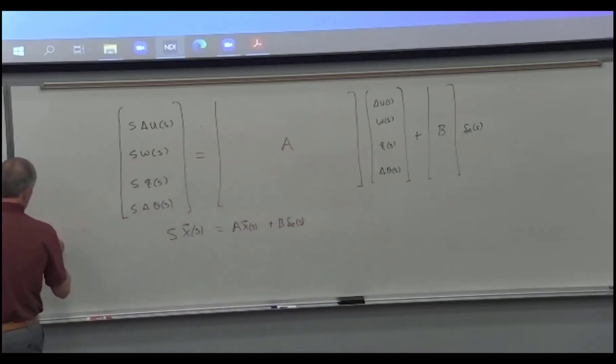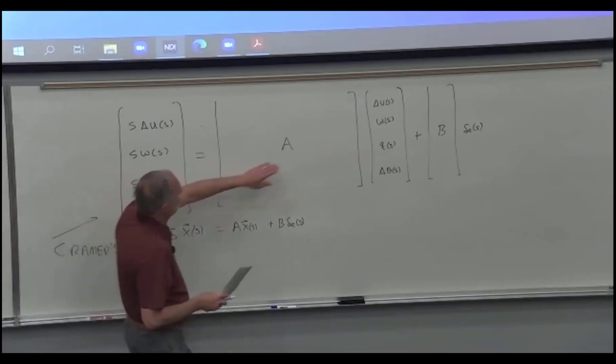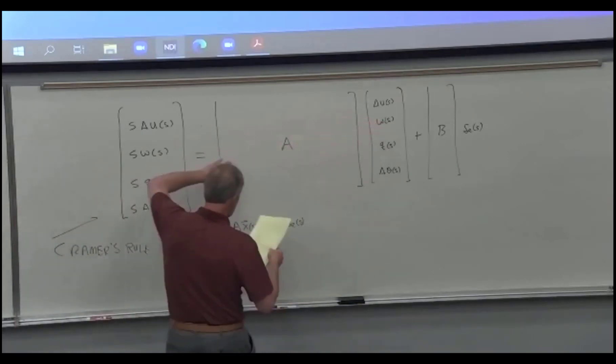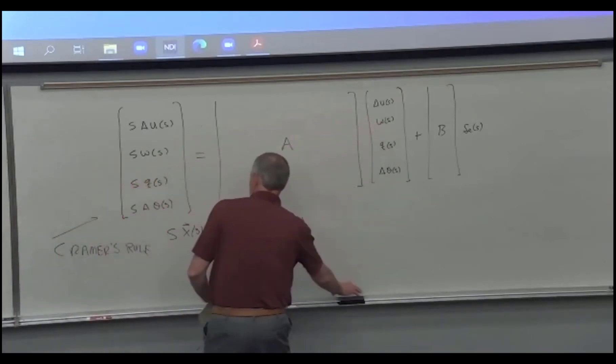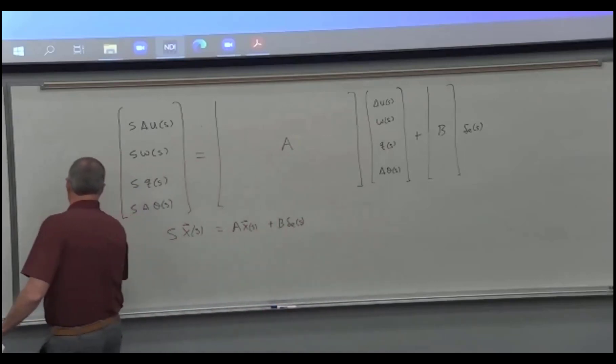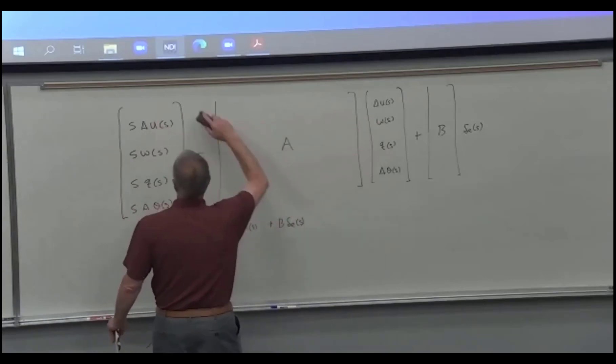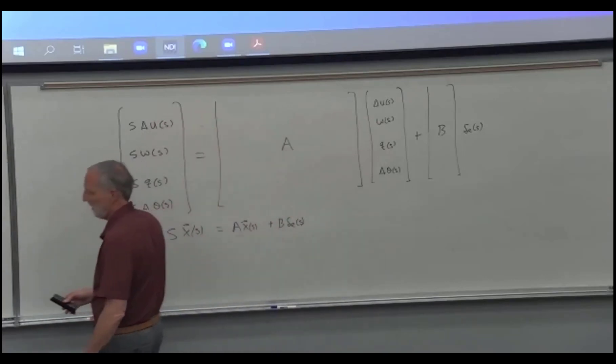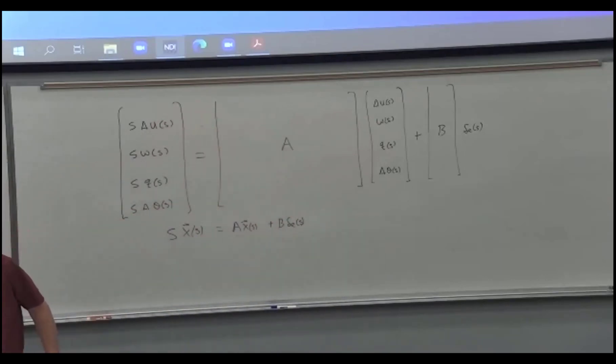If we use Cramer's rule to solve this, we need to solve for the first unknown. Sorry, we can do some algebra first. We want to solve for this vector, so we have to get the delta U's, all of the delta U's, over on one side. So we're going to rearrange this.